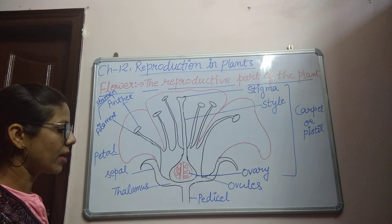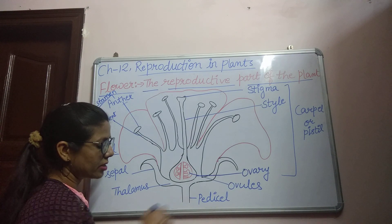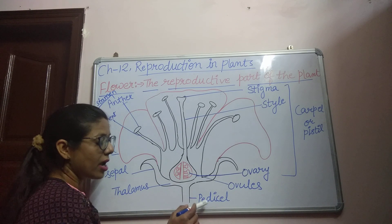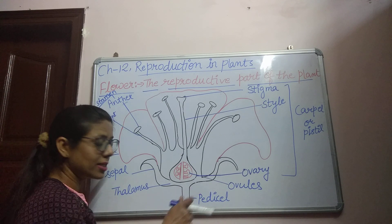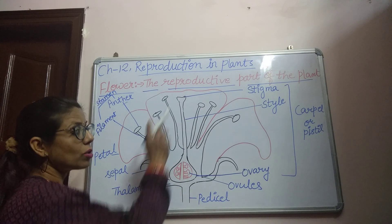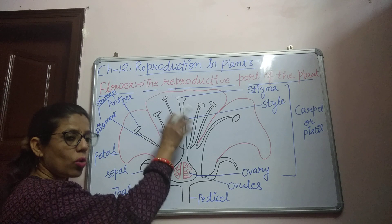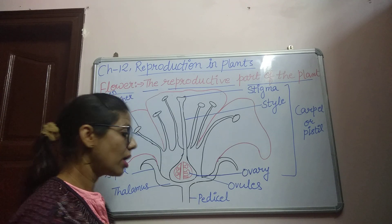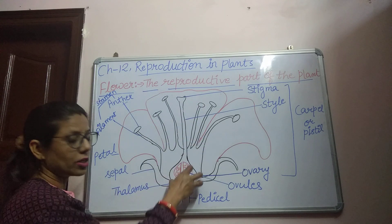You can see the diagram of a flower with its different parts. First of all, there is a stalk which is known as the pedicel. With the help of the pedicel, the flower is attached to the stem. All the parts of the flower — such as stamen, carpel, petal, and sepal — are present on the thalamus. The thalamus is a swollen, base-like structure on which all the parts of the flower are present.